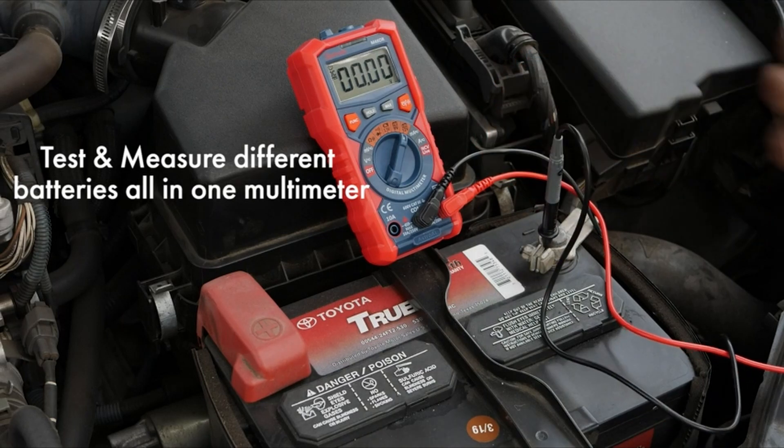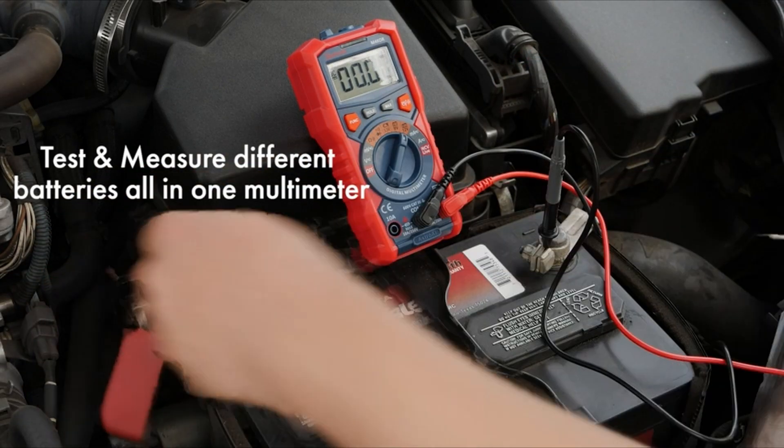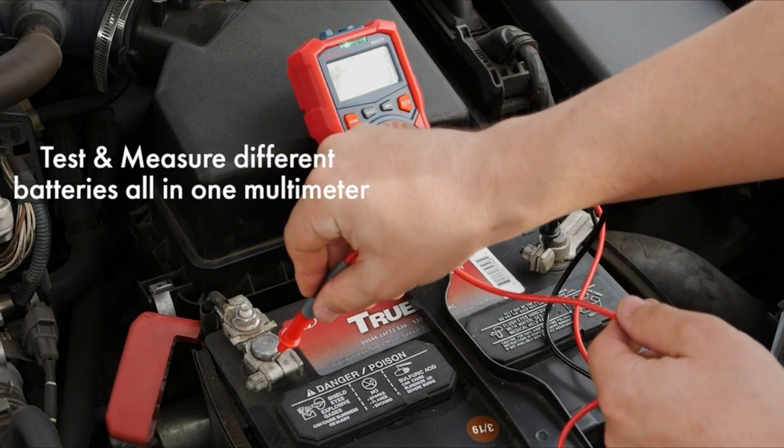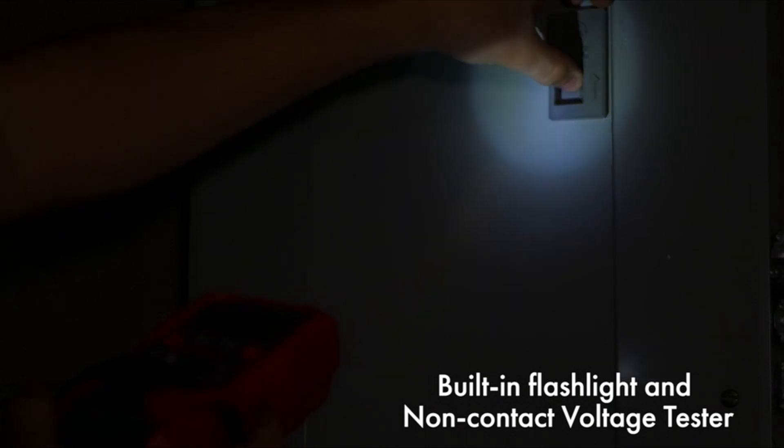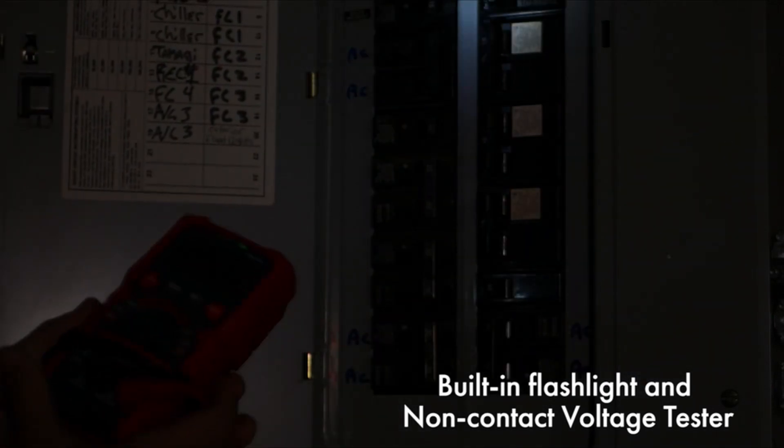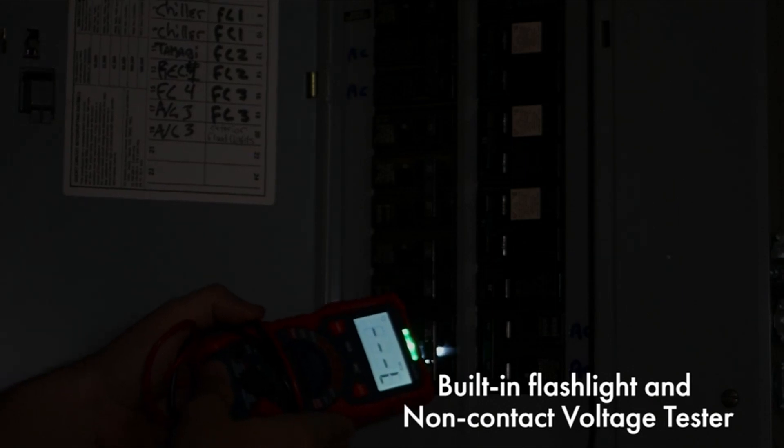The multimeter is described as a perfect tool for troubleshooting automotive and household appliances, offering various features and safety functions. Key features highlighted in the review include data hold, max, auto shutoff, low battery indicator, continuity buzzer, and an LCD backlit screen.